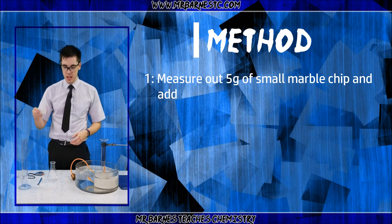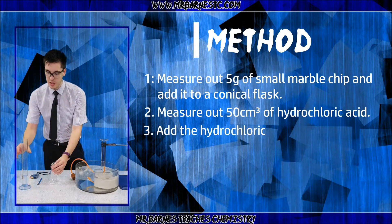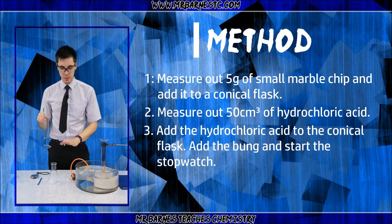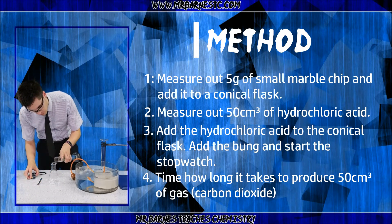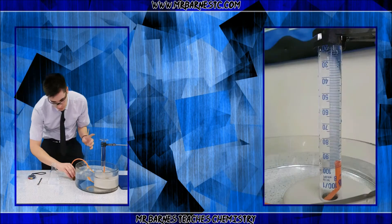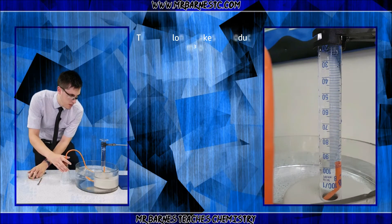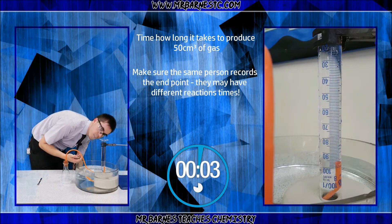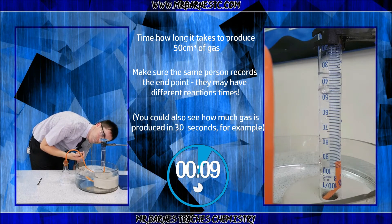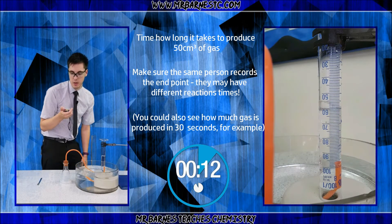The first thing I'm going to do is take my marble chip and put it into my conical flask. I'm going to have a stopwatch ready, and the second I tip in my acid I'm going to start the stopwatch and time how long it takes to produce 50ml of gas. You can see the carbon dioxide being produced - I've started my stopwatch and I'm timing how long it takes to produce 50ml. That took about 12 seconds.